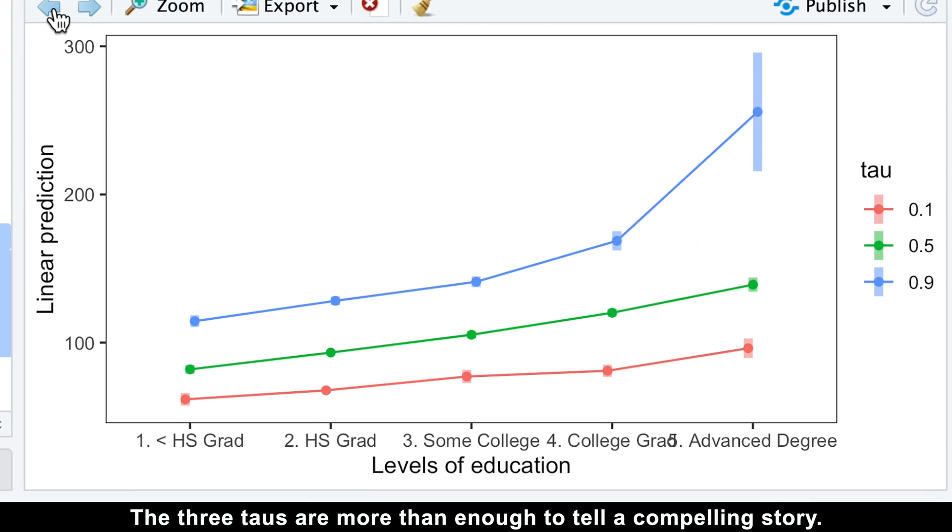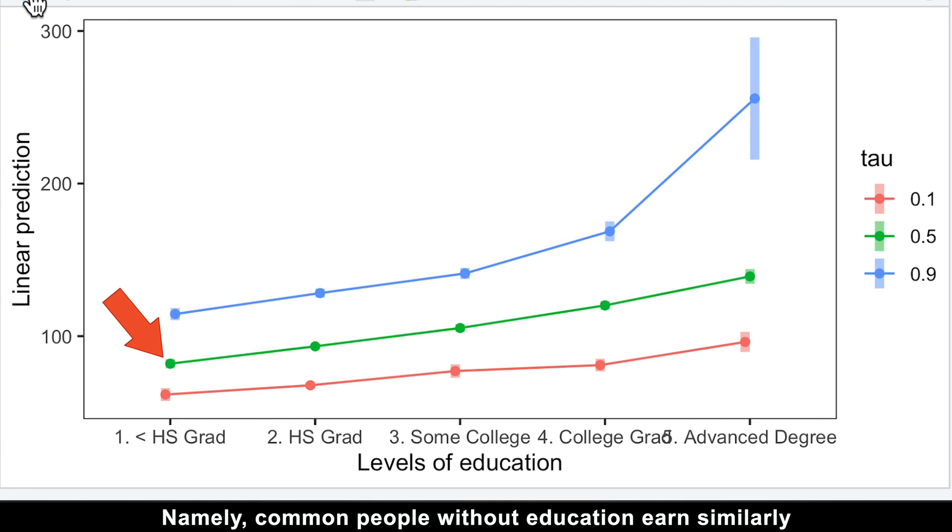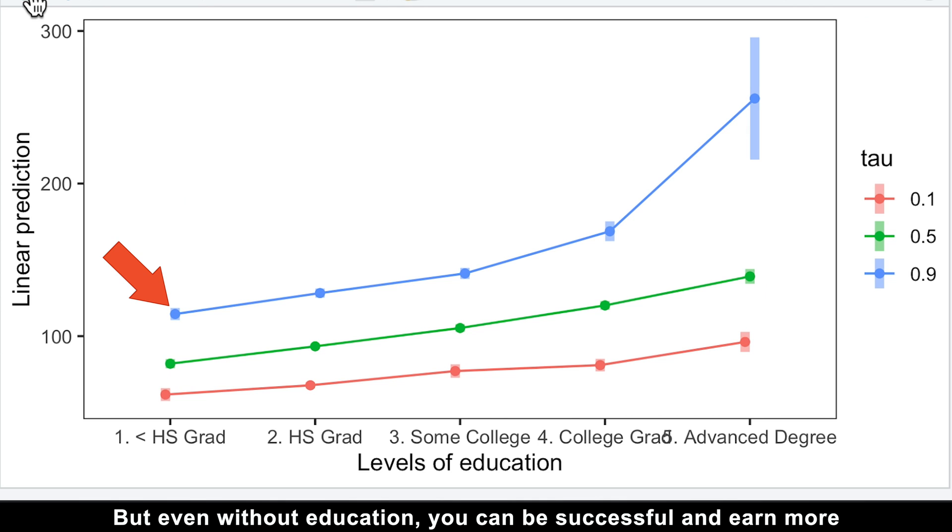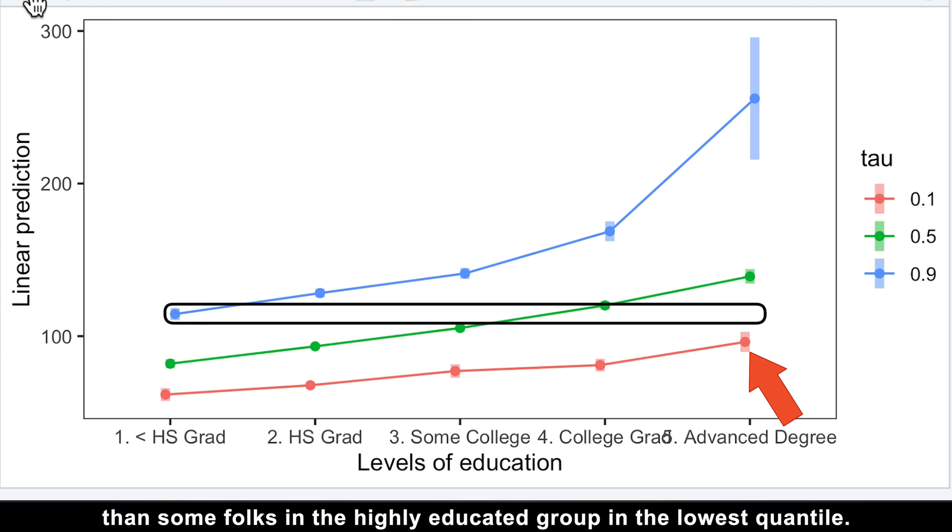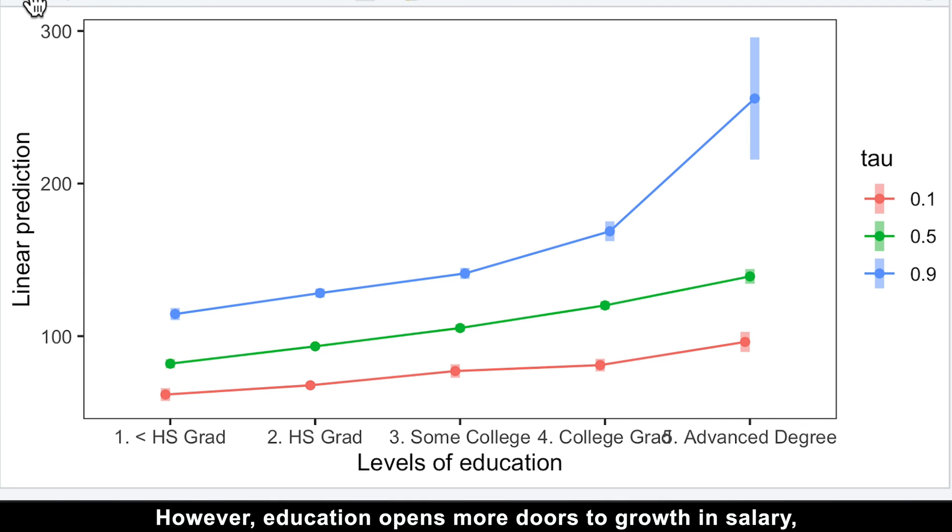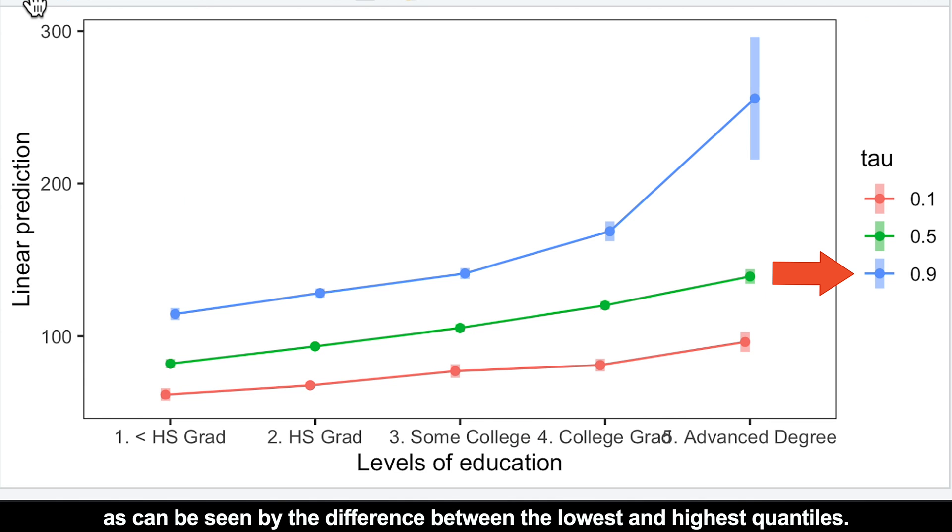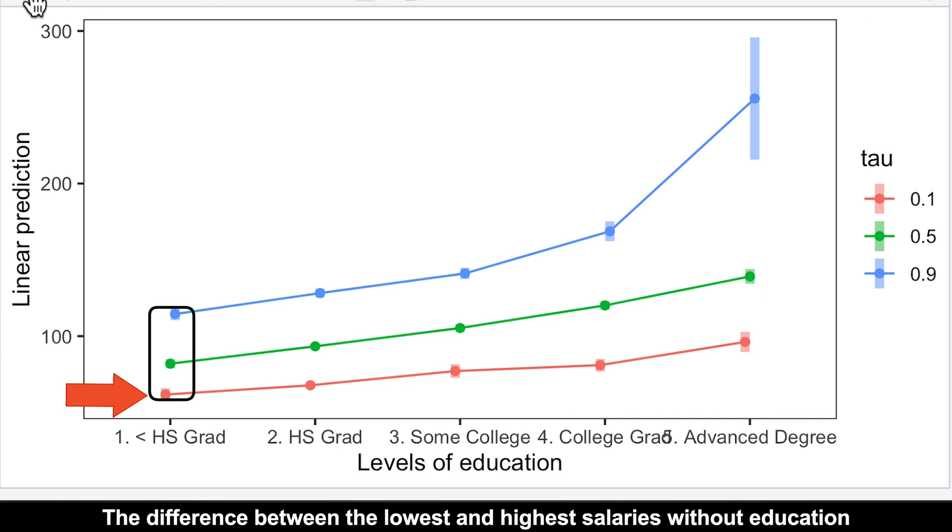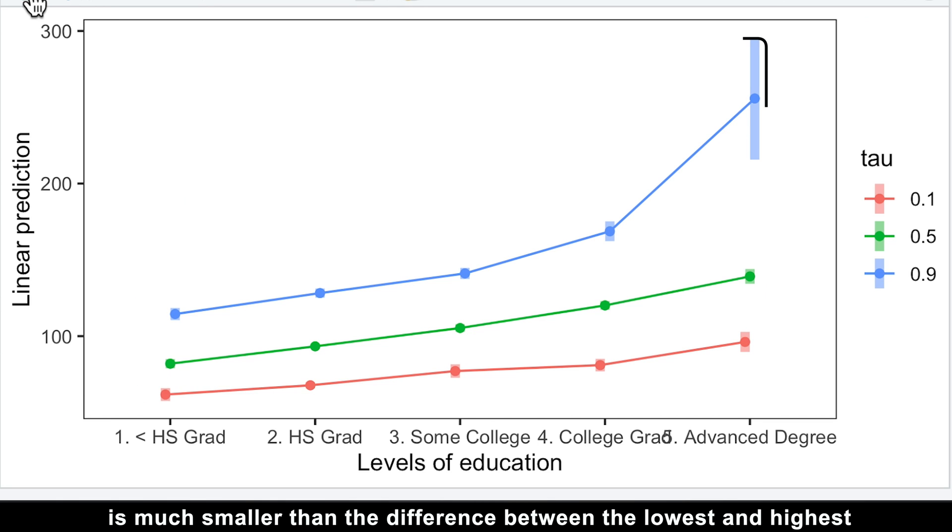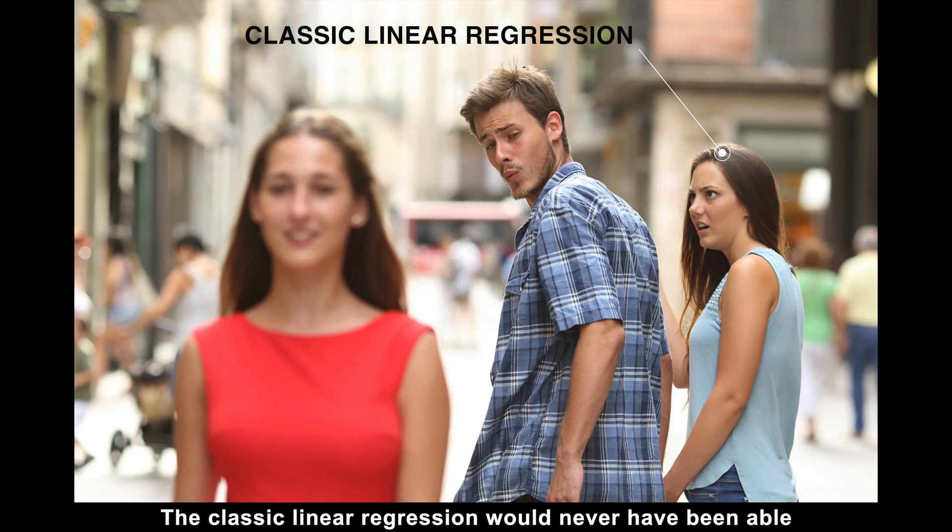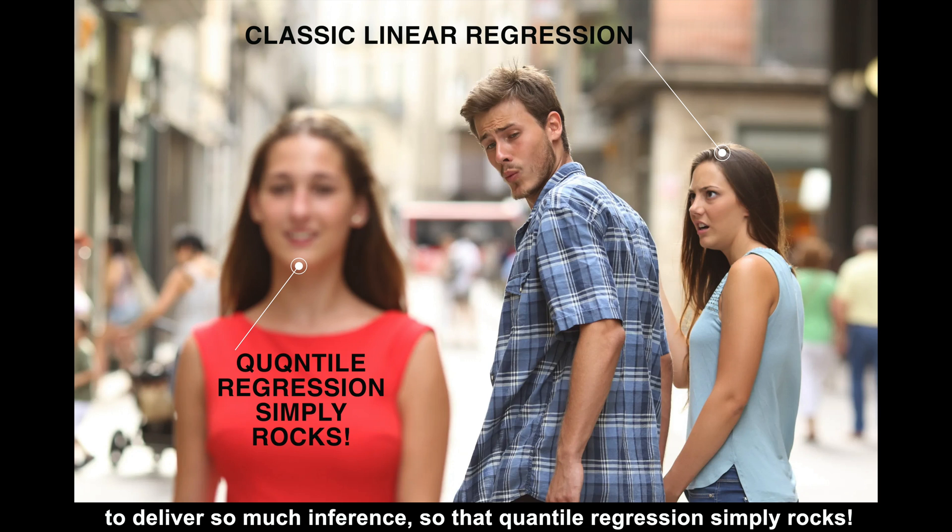The three taus are more than enough to tell a compelling story. Namely, common people without education earn similarly to the lowest 10% earners with a college degree, but still less than the lowest 10% of earners with the highest education. But even without education, you can be successful and earn more than some folks in a highly educated group in the lowest quantile. However, education opens more doors to growth in salary as can be seen by the difference between the lowest and highest quantiles. The difference between the lowest and highest salaries without education is much smaller than the difference between the lowest and highest salaries with the highest education. The classic linear regression would have never been able to deliver so much inference, so that quantile regression simply rocks. And if you also find it as useful as me, please consider hitting the like button.